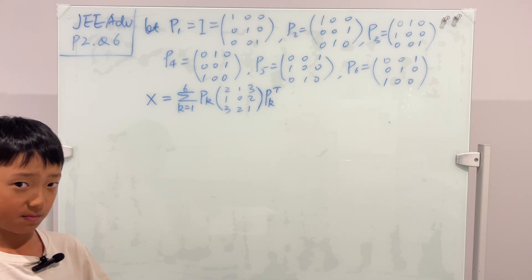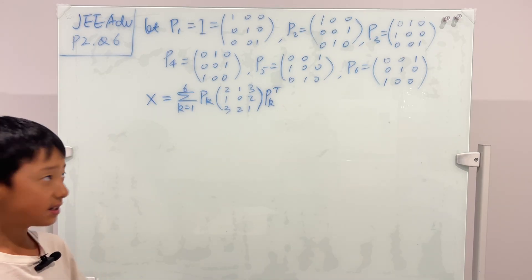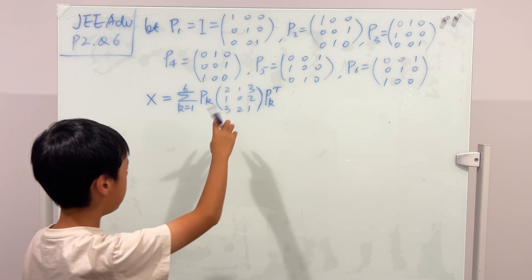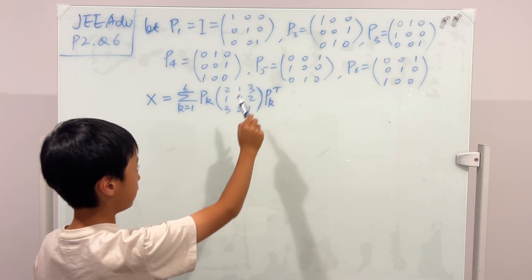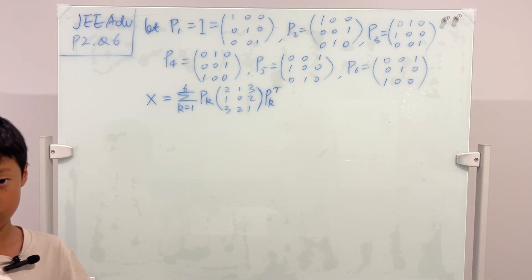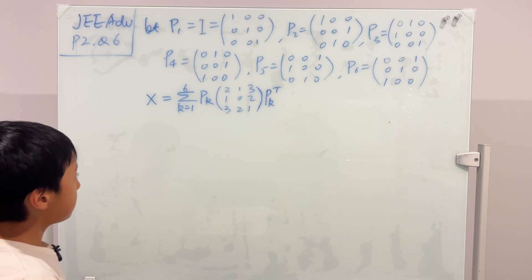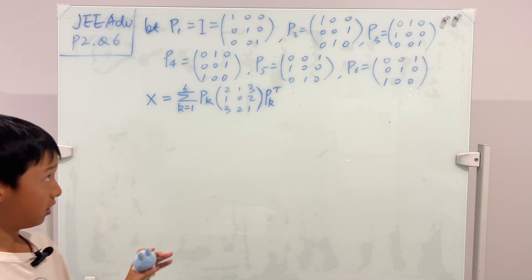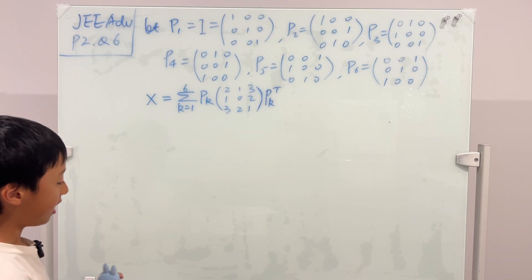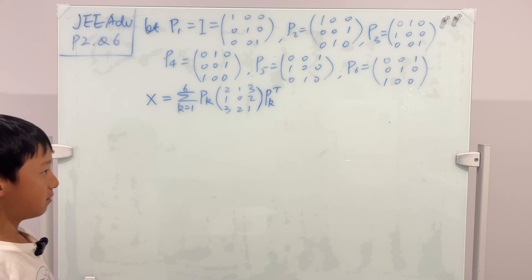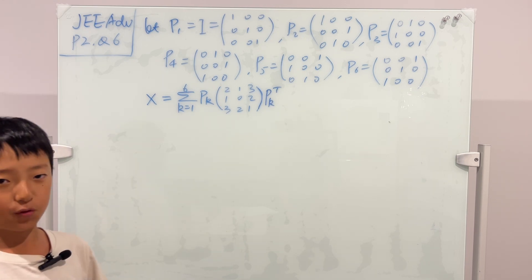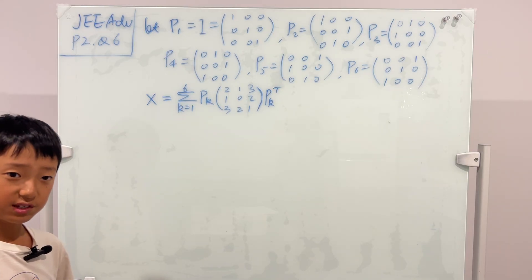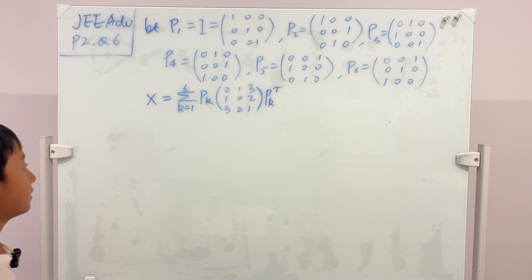Now look at X — this is actually a symmetric matrix, because the entries 1,1,3,3,2,2 are symmetric. You might be wondering what we're trying to find. It's a multiple choice question, and I'll go through the choices as we progress through the video.